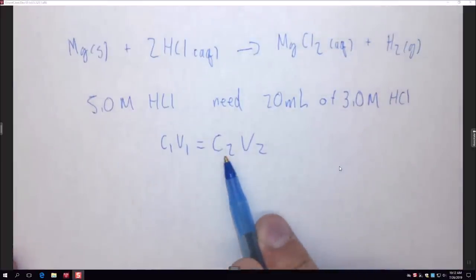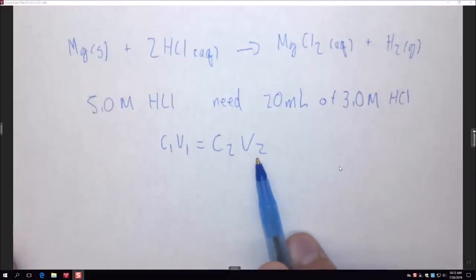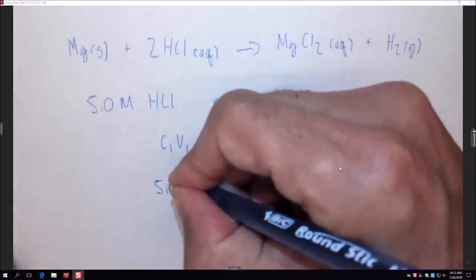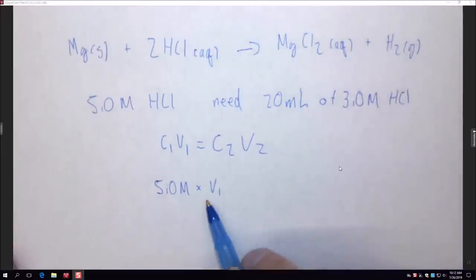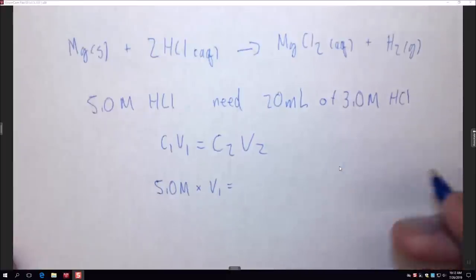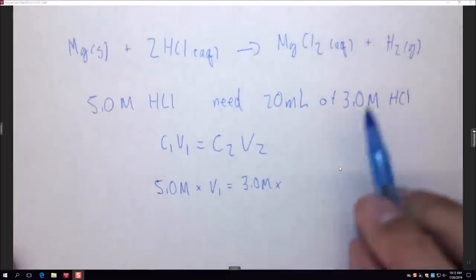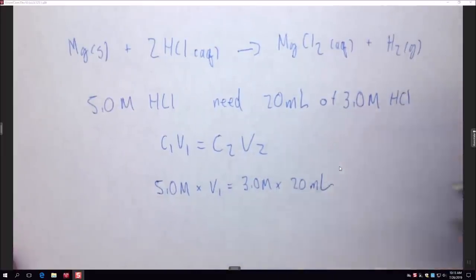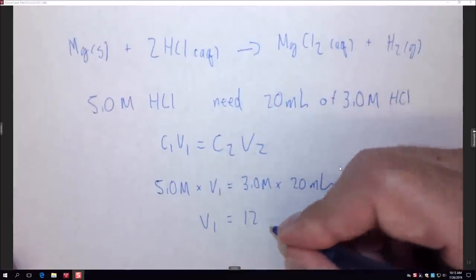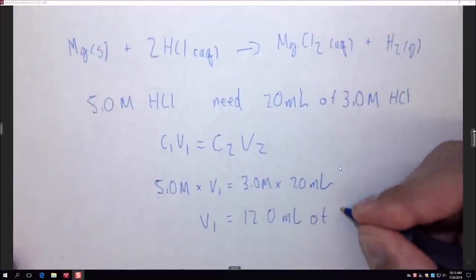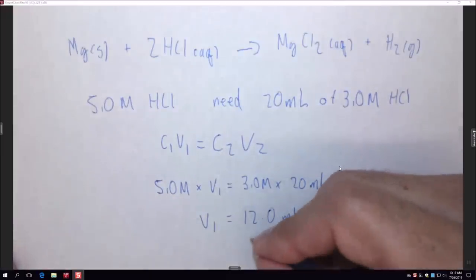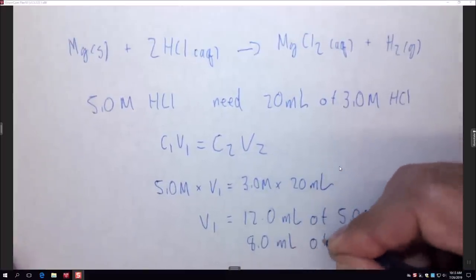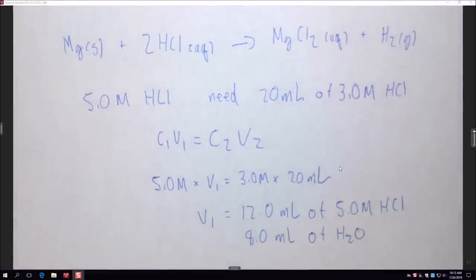V₁ is the initial volume and V₂ is the final volume. The initial concentration is 5 molar. C₂ is what we want — 3 molar — and V₂ is 20 milliliters. When we do the math, V₁ equals 12 milliliters of 5 molar HCl. We want the total volume to be 20 milliliters, so we add the 12 mL of HCl to 8 mL of water — 12 plus 8 equals 20 milliliters.